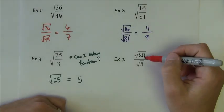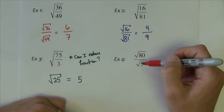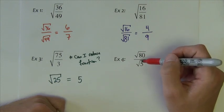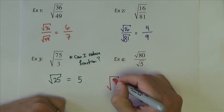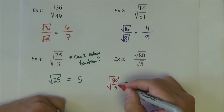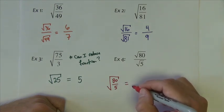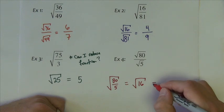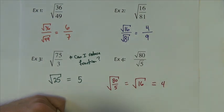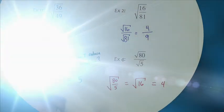So the last one, I recognize that I have no perfect squares. But I do recognize that 80 divides by 5. So what I do is put this back together as one fraction, and then I reduce the fraction. 80 divides by 5, 16 times. The square root of 16 is 4.